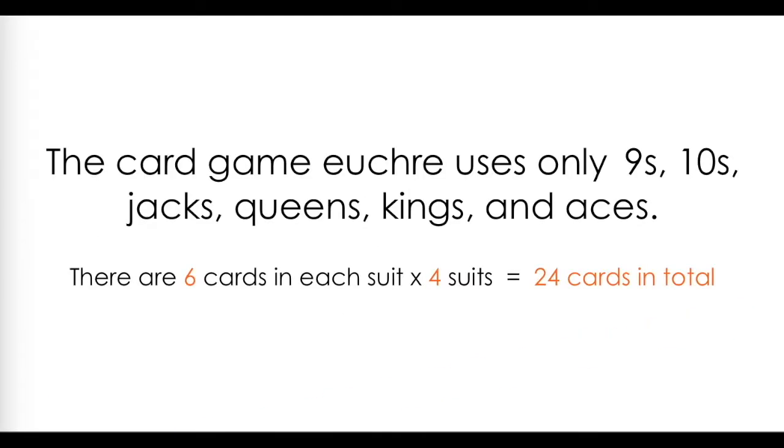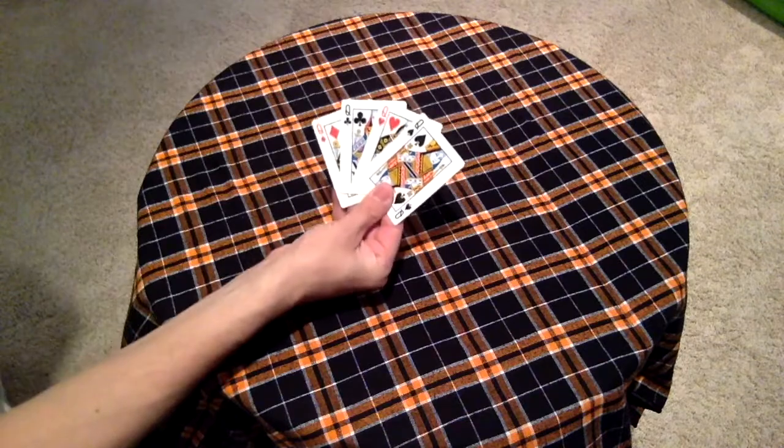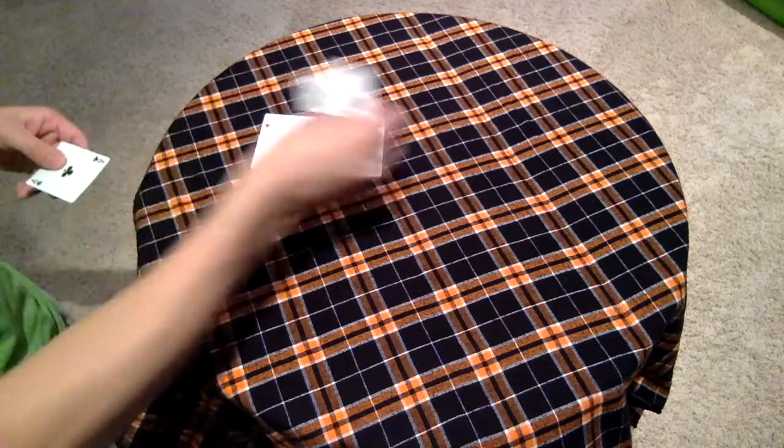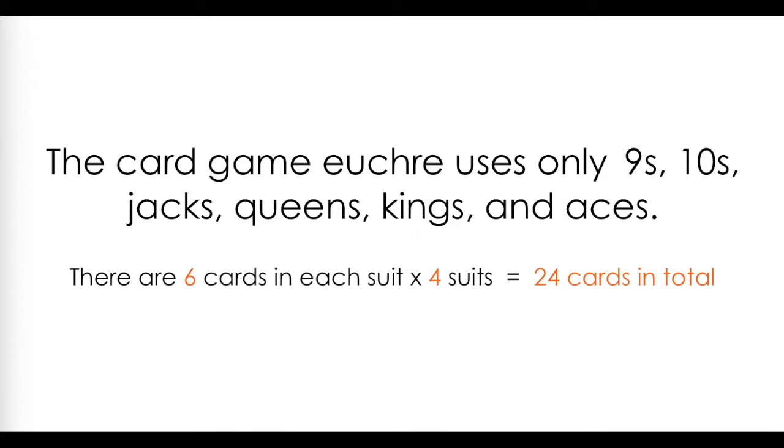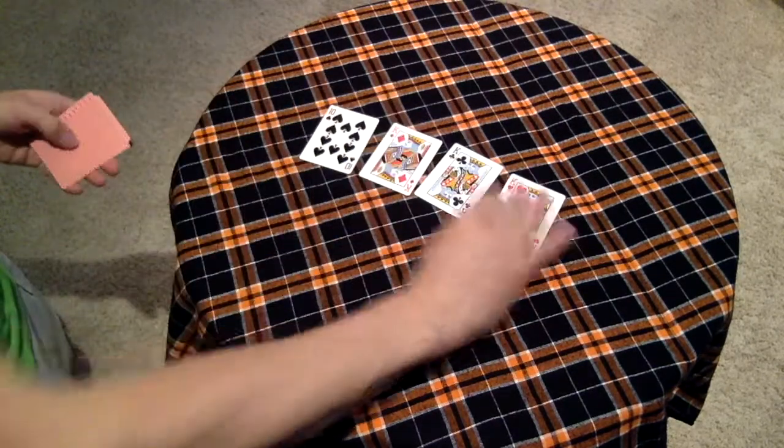Now I'm going to use an example of a game called Euchre. Note that you do not need to know how to play Euchre to understand the example shown. However, you should note that the game Euchre uses only cards of value 9, 10, jack, queen, king, and ace. Since there are only six card types in this game, and there are four suits of cards, hearts, diamonds, spades, and clubs, there are a total of 24 cards in this game. In the game of Euchre, five card hands are dealt to players.